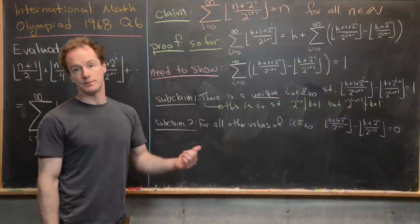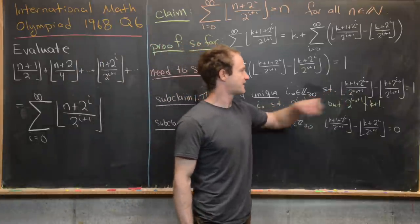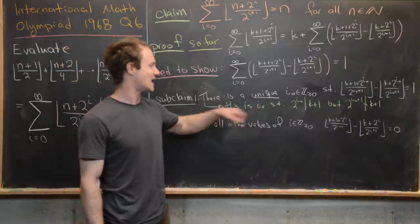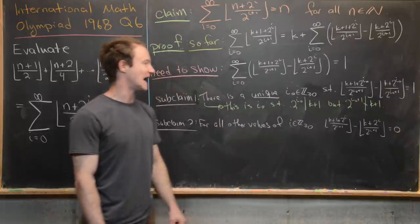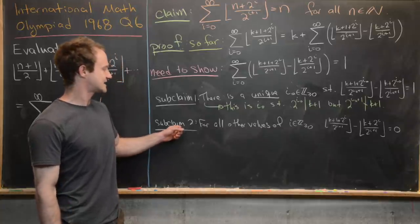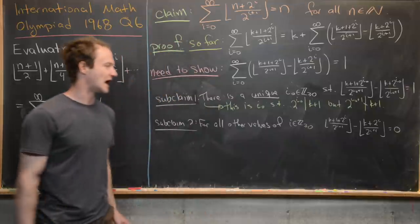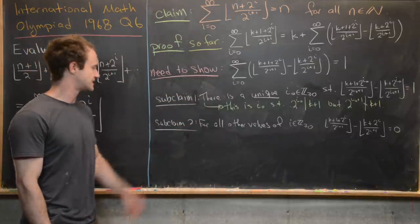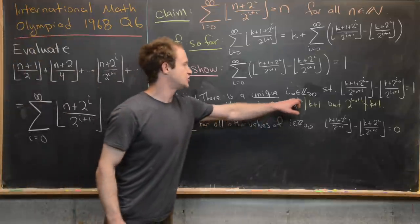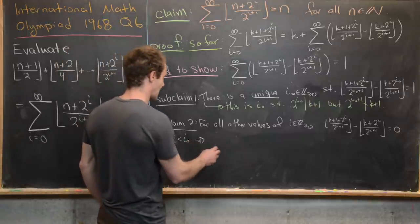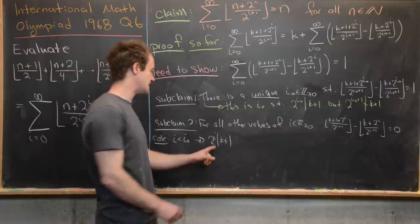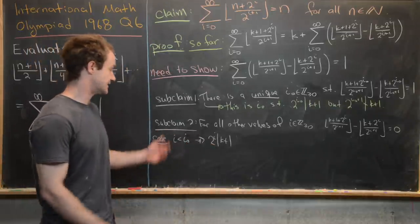We've proved there is exactly one non-negative integer i₀ such that the floor difference equals 1, where 2^(i₀) divides k+1 but 2^(i₀+1) does not. Now subclaim 2 says that for all other values of i, the floor difference equals 0. We split into two cases: i < i₀ and i > i₀.